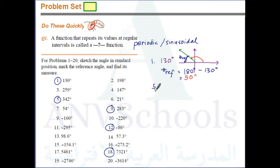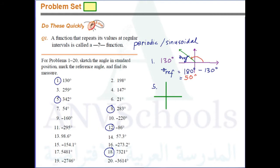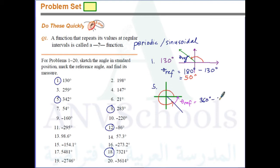Number five is 342 degrees. It lies between 270 degrees and 360 degrees, so it's in the fourth quadrant. The sketch goes here, and our theta-ref is the positive acute angle. Theta-ref equals 360 degrees minus 342 degrees, which gives us 18 degrees.